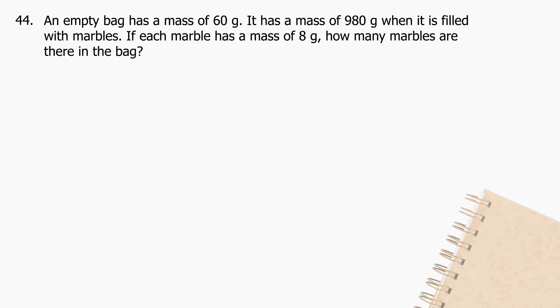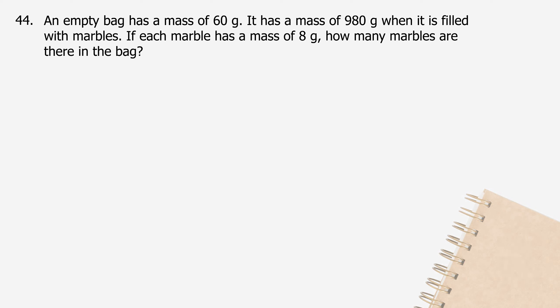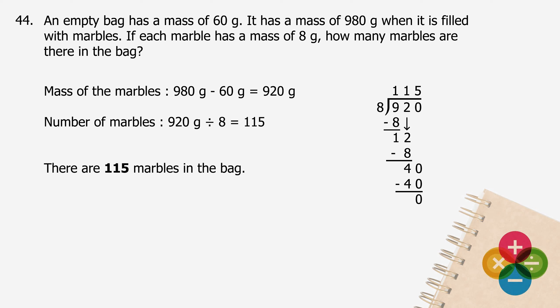Question 44: An empty bag has a mass of 60 grams. It has a mass of 980 grams when filled with marbles. If each marble has a mass of 8 grams, how many marbles are there in the bag? The mass of the marbles will be 980 grams minus 60 grams, and the difference is 920 grams. The number of marbles will be 920 grams divided by 8, and the quotient is 115. There are 115 marbles in the bag.